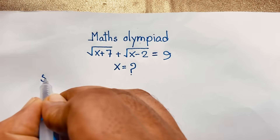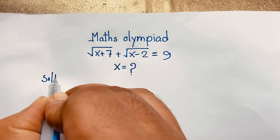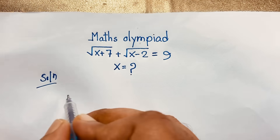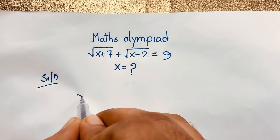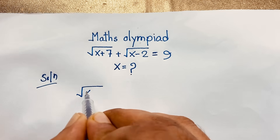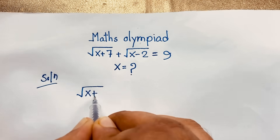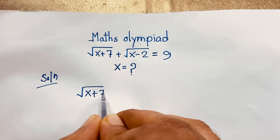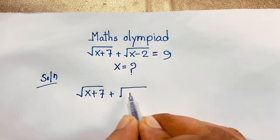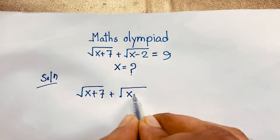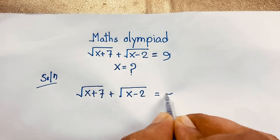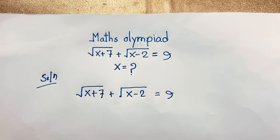So our math solution — our question is: square root of (x plus 7) plus square root of (x minus 2) is equal to 9. This is our question.